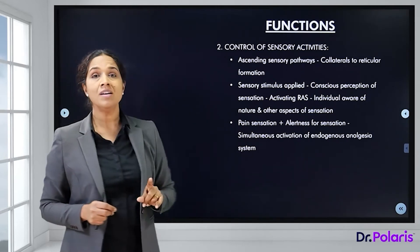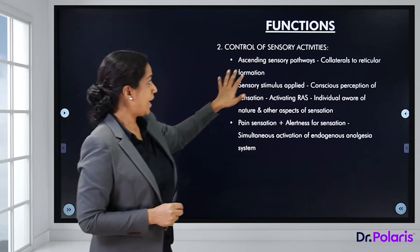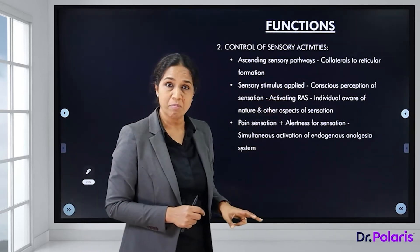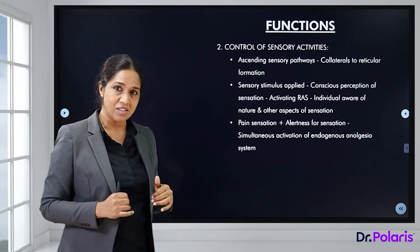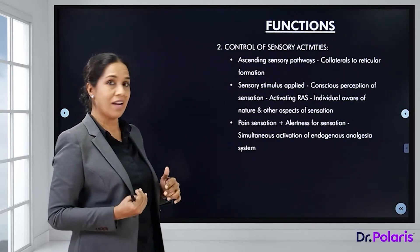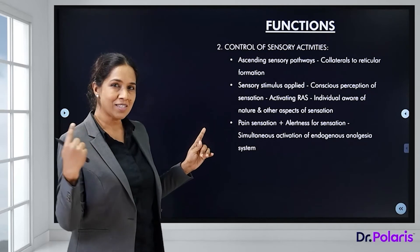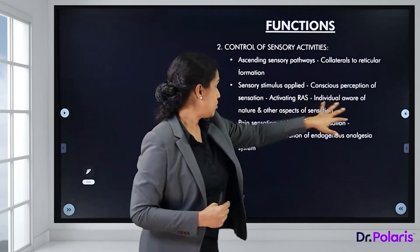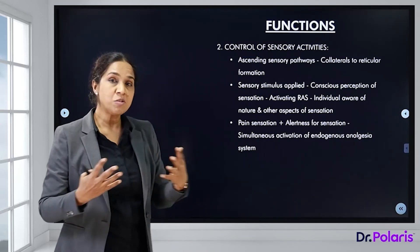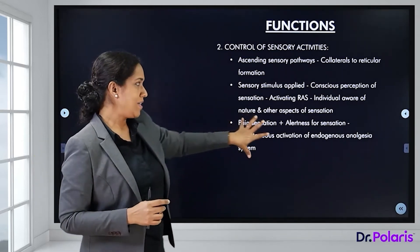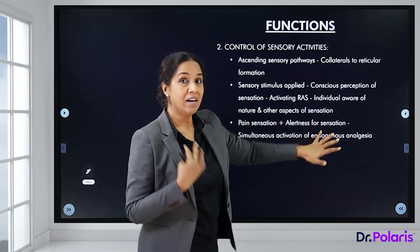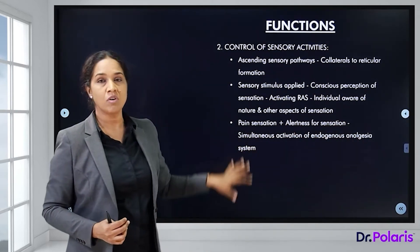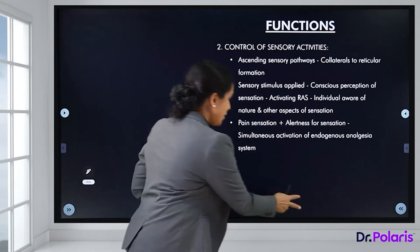For the control of sensory activities: ascending sensory pathways send collaterals to the reticular formation. When a sensory stimulus is applied, conscious perception activates the reticular activating system, making the individual aware of the nature and all aspects of the sensation. Pain sensation increases alertness, and there is simultaneous activation of the endogenous analgesia system along with activation of the reticular formation.